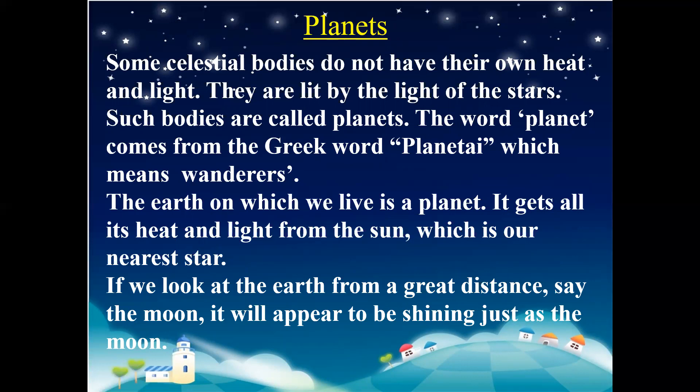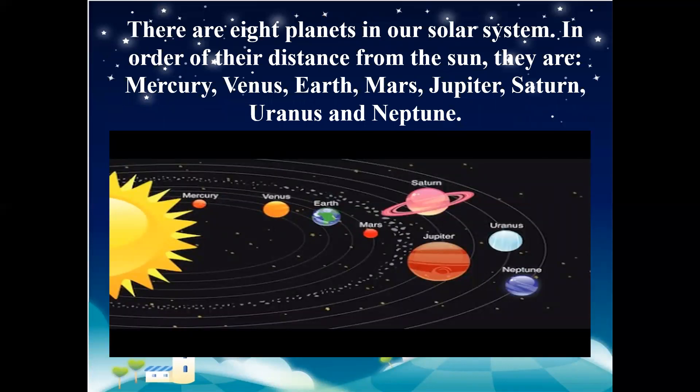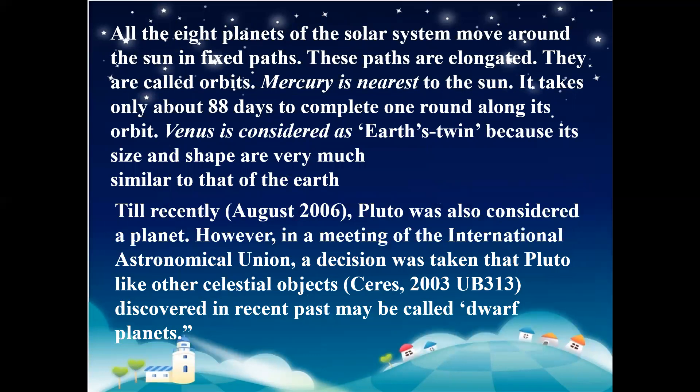If we look at the Earth from a great distance, say from the moon, it will appear to be shining just as the moon does. There are eight planets in the solar system in order of their distance from the sun: Mercury, Venus, Earth, Mars, Jupiter, Saturn, Uranus, and Neptune. The eight planets move around the sun along fixed paths. These paths are elongated and are called orbits. Mercury is the nearest planet to the sun and it takes 88 days to complete one round along its orbit.